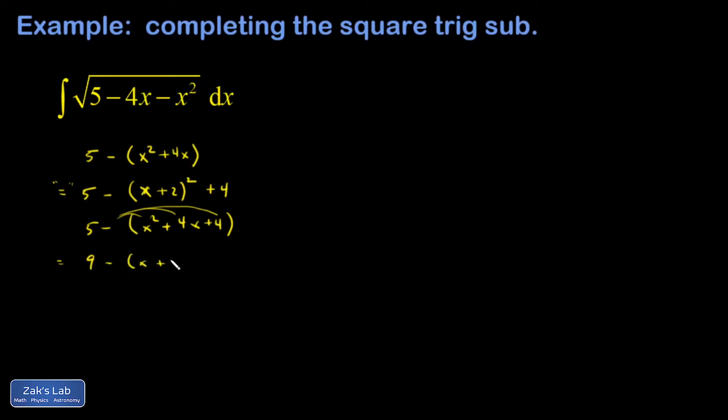It might be a good idea to check our work on this. I have 9 minus (x² + 4x + 4). When I distribute the negative 1, I get 9 - x² - 4x - 4.